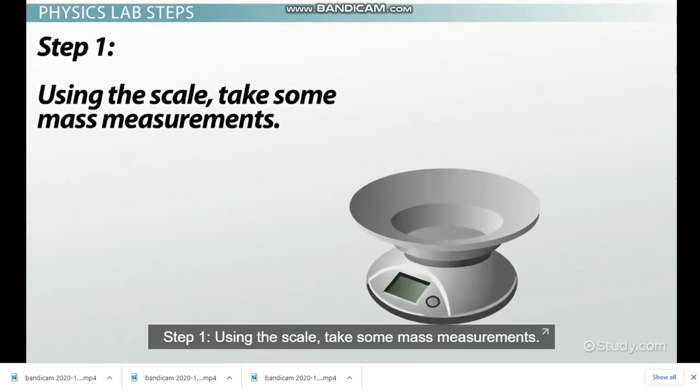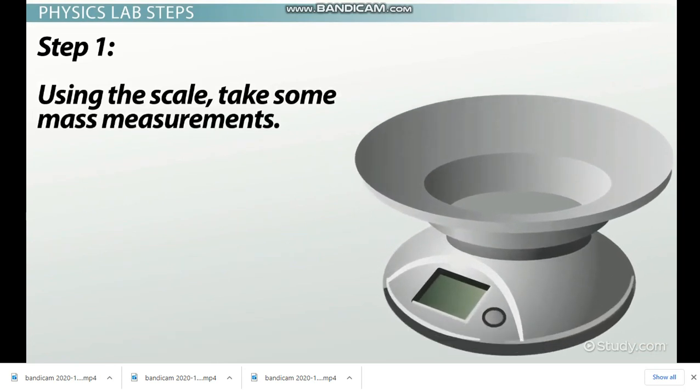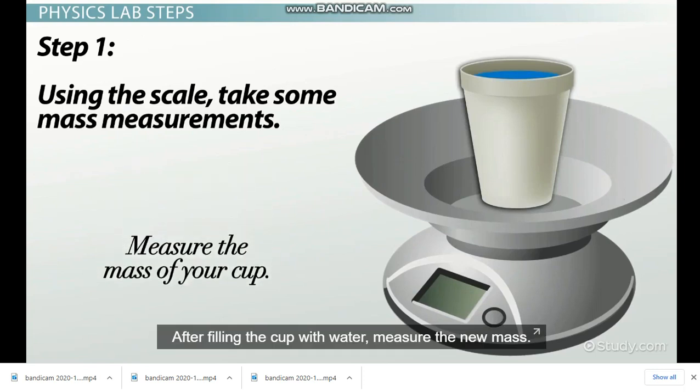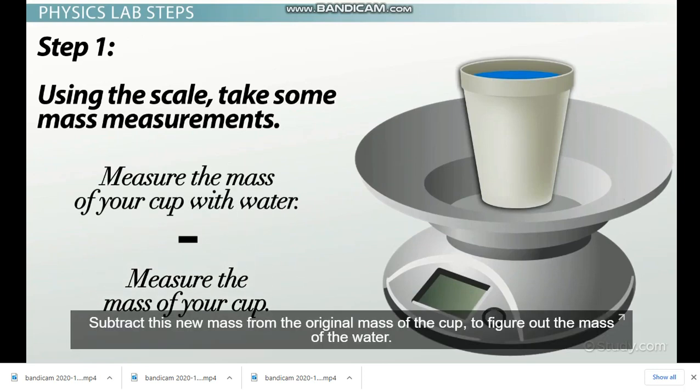Step 1: Using the scale, take some mass measurements. Measure the mass of the metal. Measure the mass of your cup. After filling the cup with water, measure the new mass. Subtract this new mass from the original mass of the cup to figure out the mass of the water.